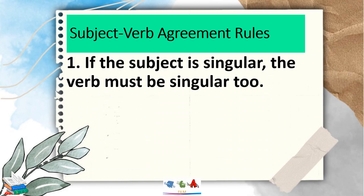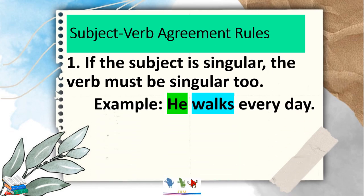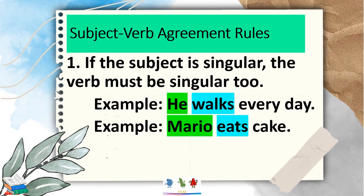Rule number 1: if the subject is singular, the verb must be singular too. For example, 'He walks every day.' He is the subject and it is singular, thus it needs a singular verb, which is 'walks.' Another example: 'Mario eats ice cream.' Mario is singular, thus it needs a singular verb, which is 'eats.'